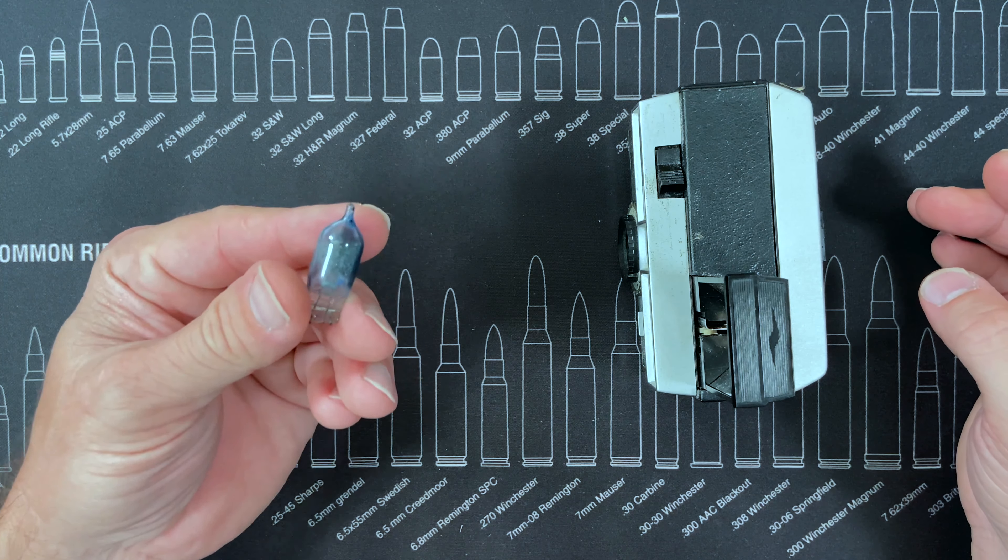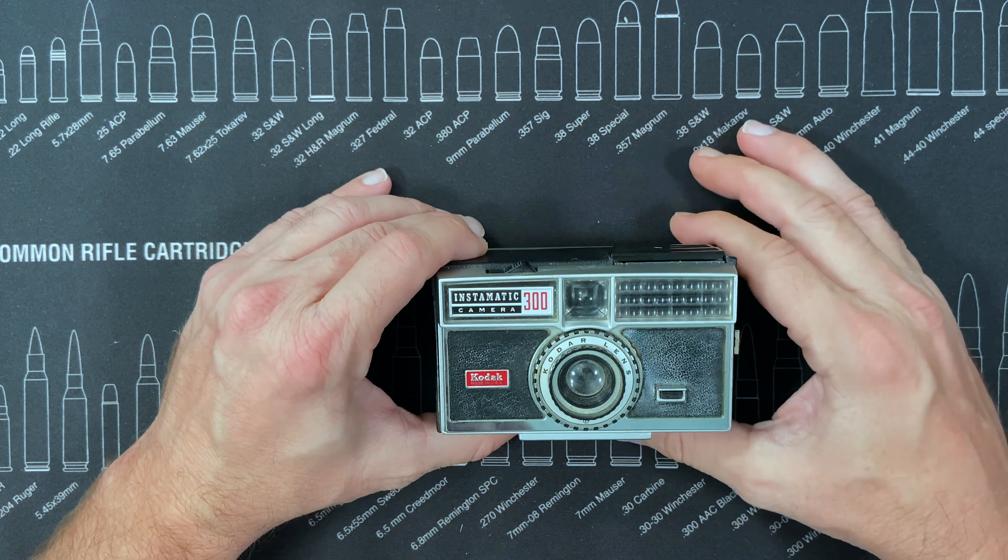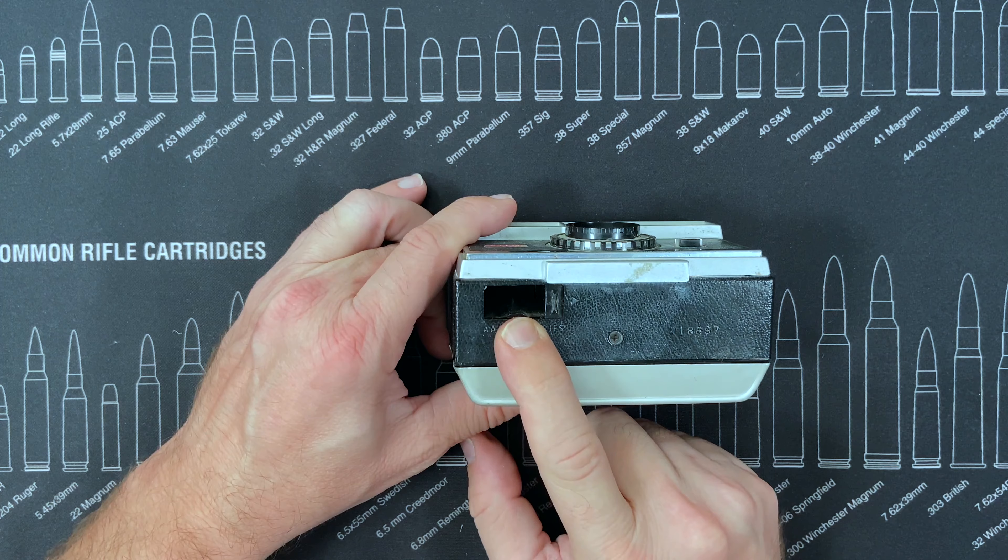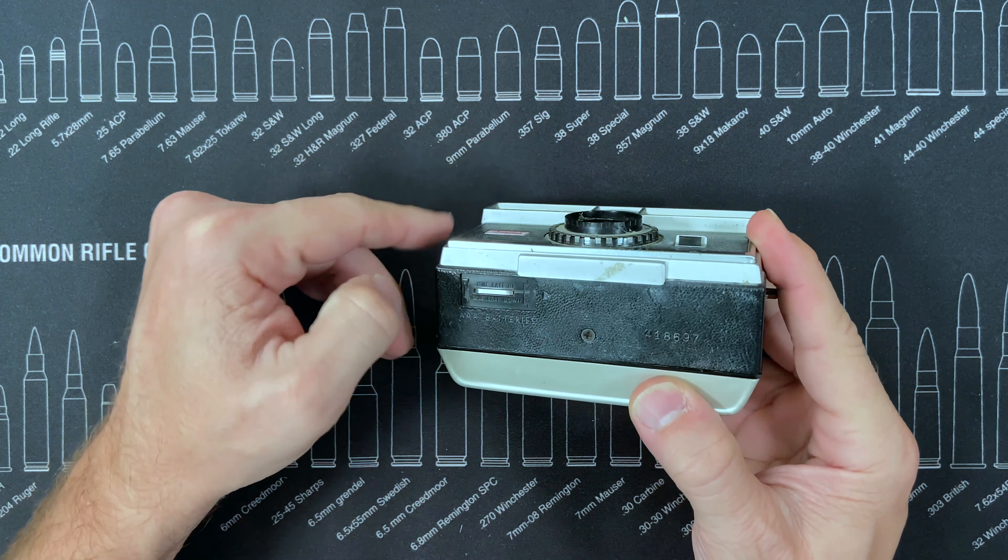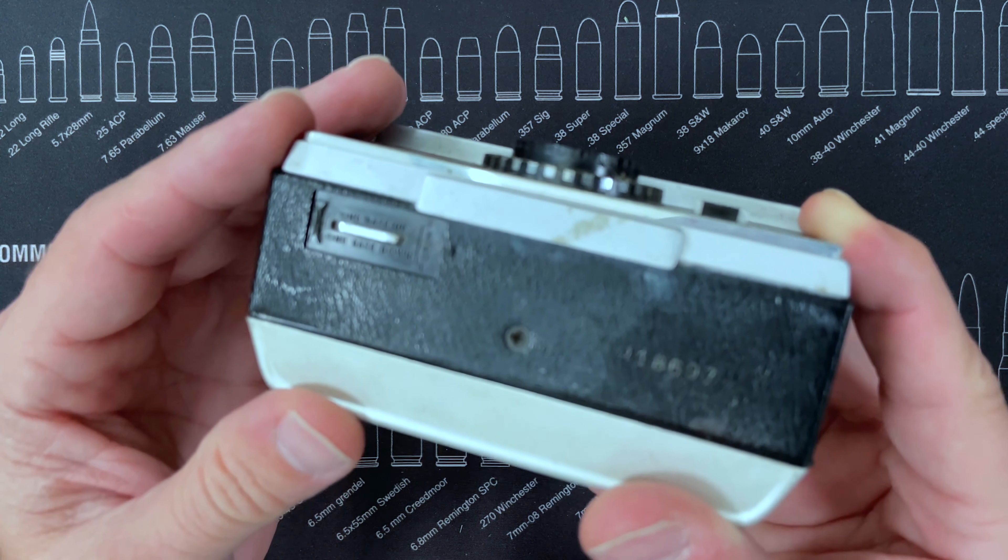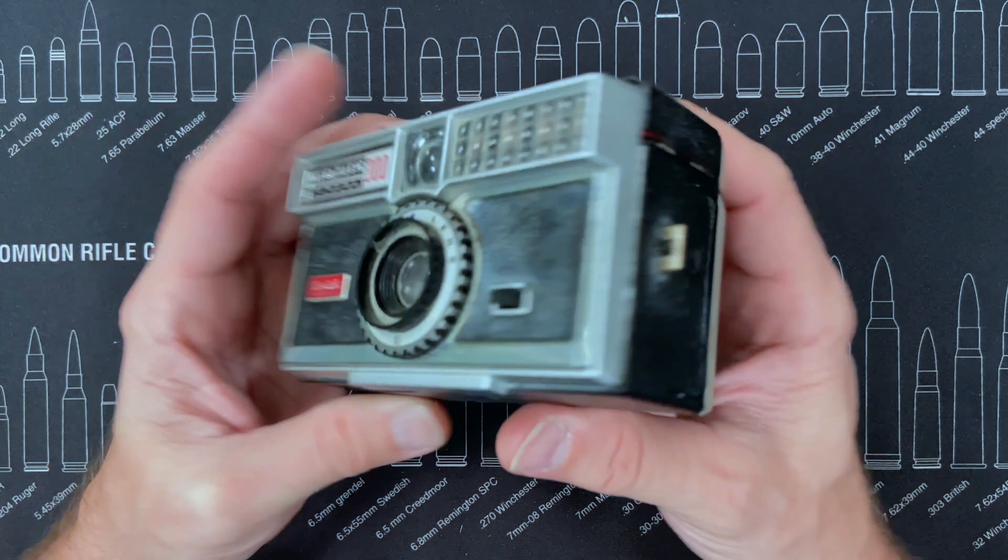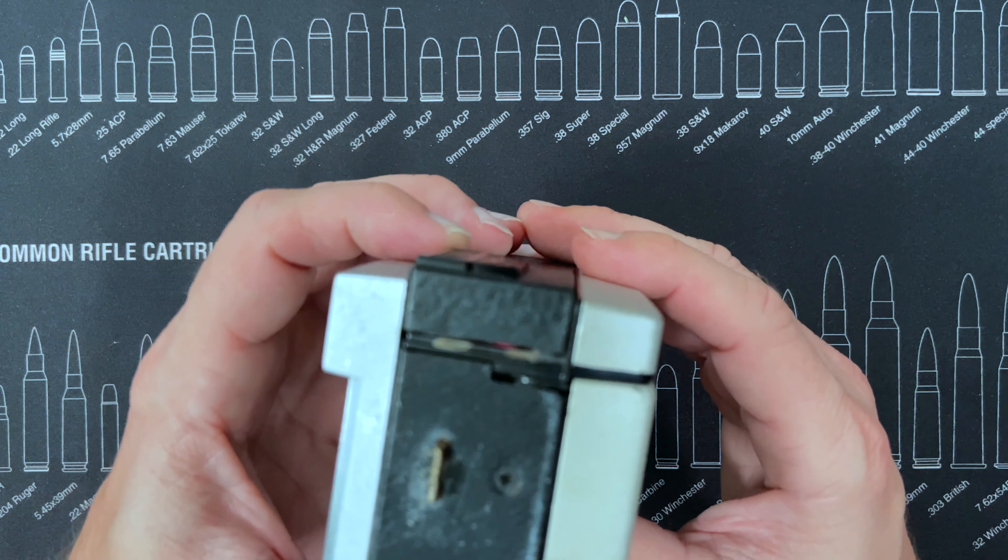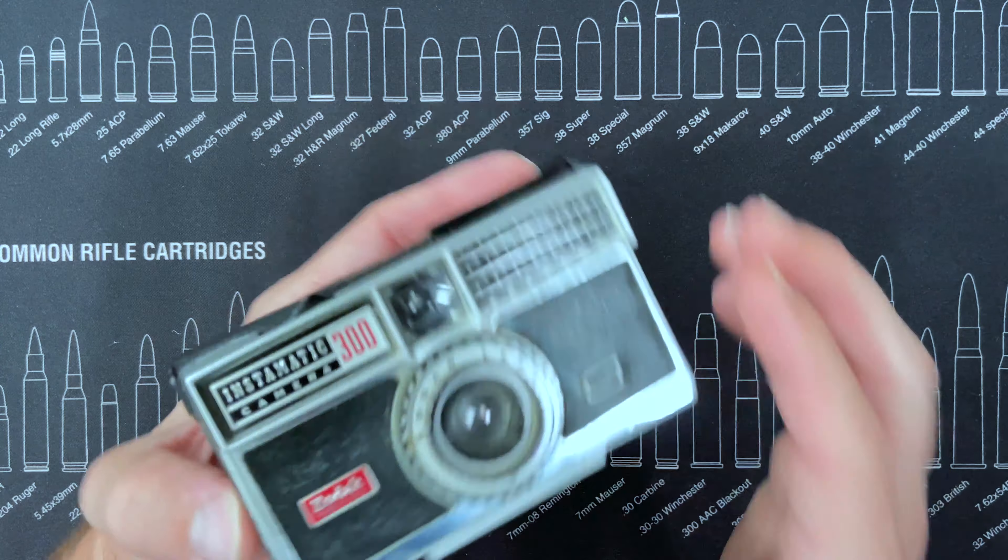This also has the handy eject button that will shoot your little AG1 bulb out once you're done with it. This is the battery compartment - you put two AA batteries in here, one up one down. There's a little loop here for your wrist strap which I don't like, so I took them all off my cameras.